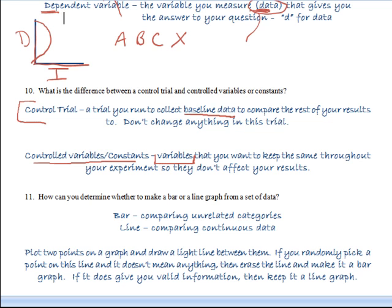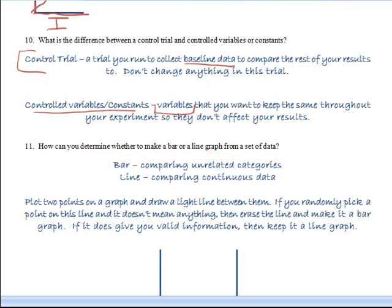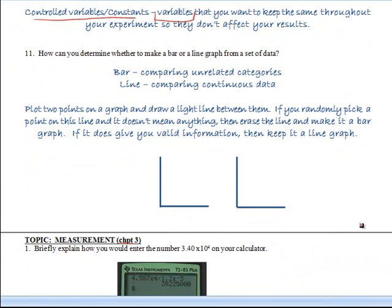Number 11, how do you determine whether to make a bar or a line? There's a trick to this. If you have unrelated categories, things that don't flow or continue on one right into the other, then it's going to be a bar. If you're comparing continuous data or data that runs from one thing right into the next, then it's going to be a line. Now here's the trick.